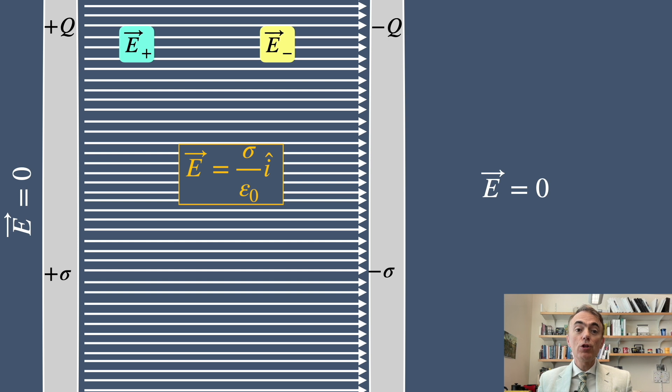This uniformity is a key feature of the parallel plate capacitor. It allows the capacitors to store energy efficiently in the electric field between the plates.